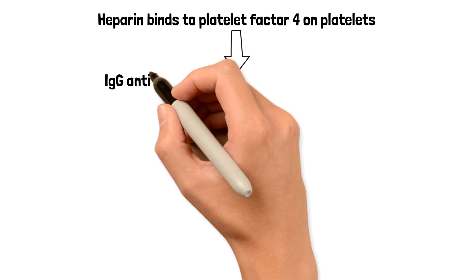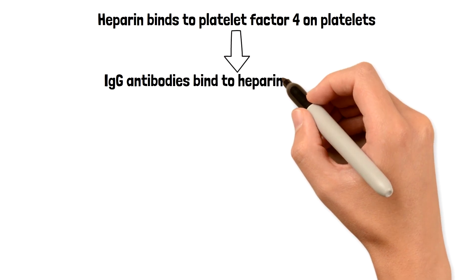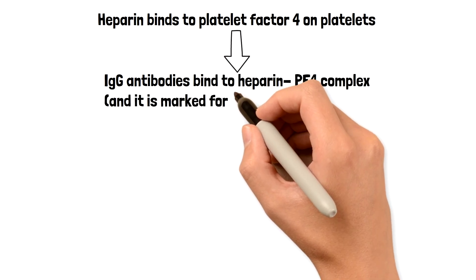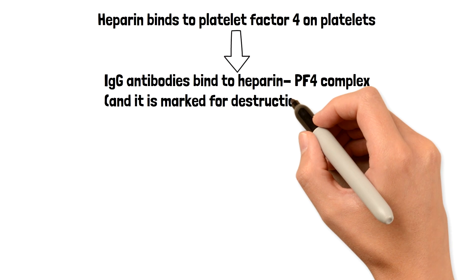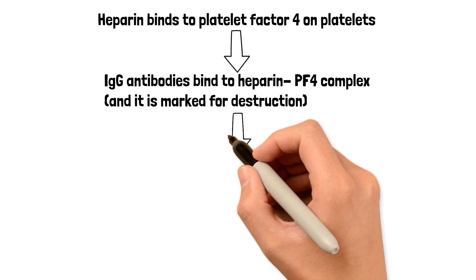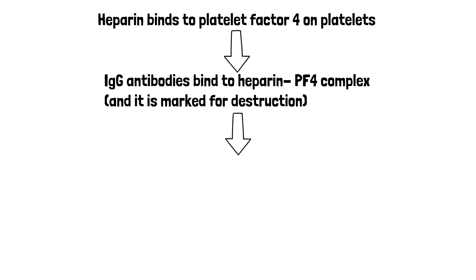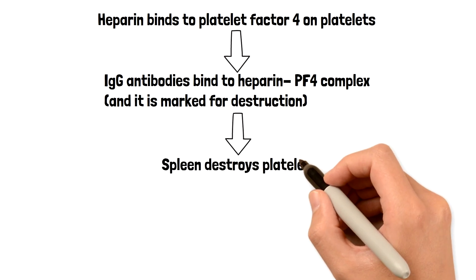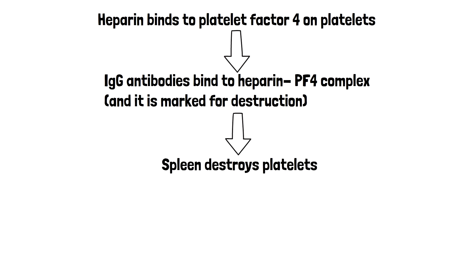Because we have these complexes, IgG antibodies are going to come and bind to these complexes on platelets. And as a result of antibody binding, it's going to mark them for destruction. The spleen is the organ that will destroy these complexes, so these complexes are going to be taken towards the spleen, and as a result the spleen will destroy these platelets.